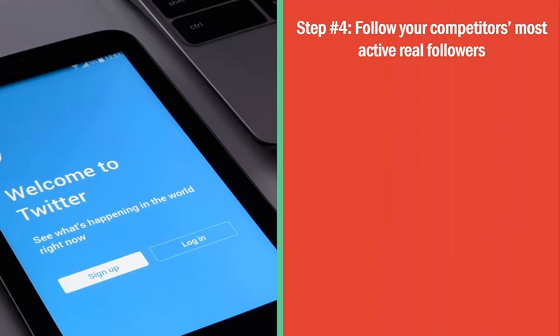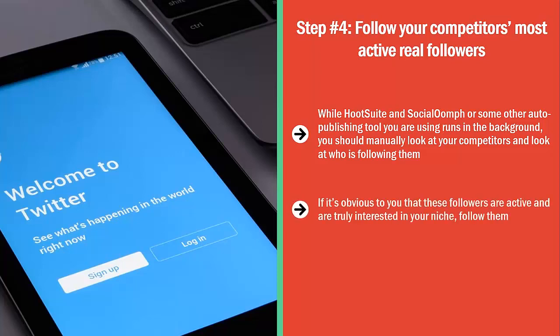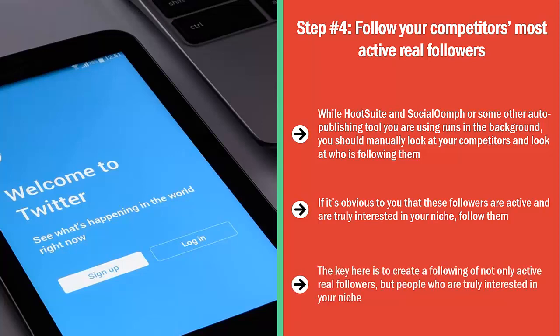Step number four: follow your competitors' most active real followers. While Hootsuite or Social Oomph or some other auto-publishing tool runs in the background, you should manually look at your competitors and look at who is following them. Go to those accounts and pay attention to the activities of those followers. If it's obvious that these followers are active and truly interested in your niche, follow them. On Twitter, a certain percentage of people will automatically follow you back — around 20-30% of people will do this. The key is to create a following of not only active real followers, but people who are truly interested in your niche.